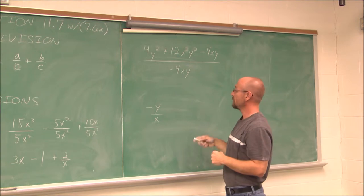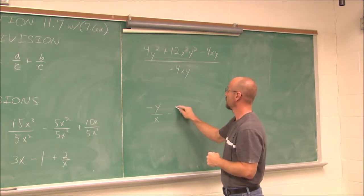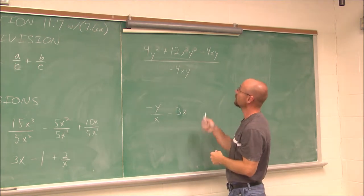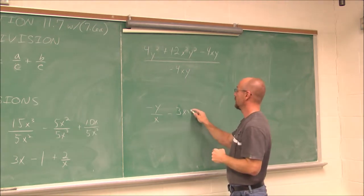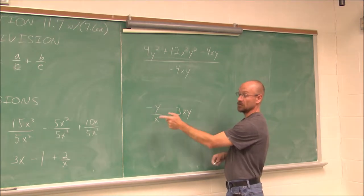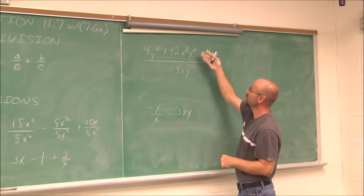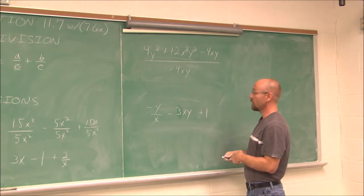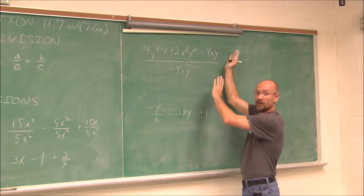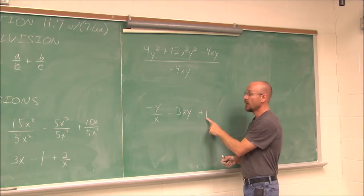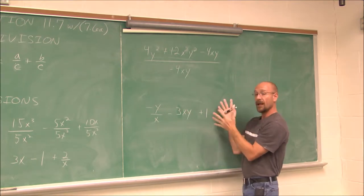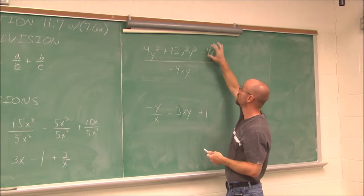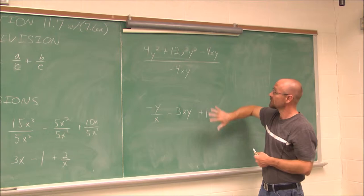The next term: 12 divided by negative 4 is negative 3. Then for the x's, x squared over x by the quotient rule gives just x remaining. Same with the y: y squared over y simplifies to y. Nothing remains in the denominator, so that term is negative 3xy. For the last term, negative 4 over negative 4 is positive 1, x over x is 1, and y over y is 1 — we have to think of them as reducing to 1, not just canceling. So the result is negative y over x minus 3xy plus 1. With practice you'll be able to do this quickly.